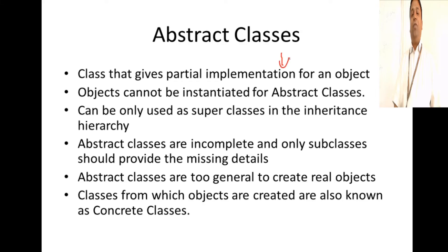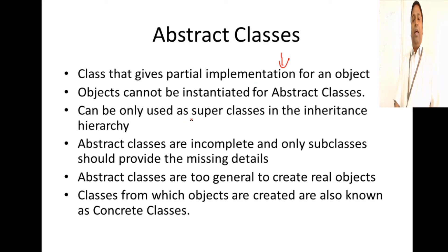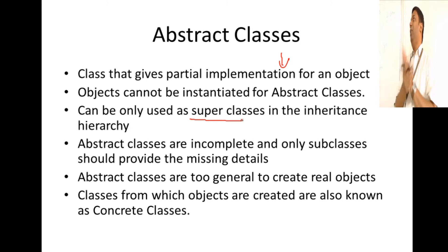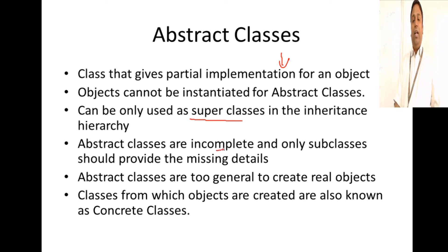What is an abstract class? It provides a partial implementation for an object, and objects cannot be instantiated from an abstract class — you cannot create an object for an abstract class. It can be used as a superclass. When you want to implement those methods, you have to extend that abstract class and implement it. Abstract classes are incomplete and only subclasses should provide the missing details.